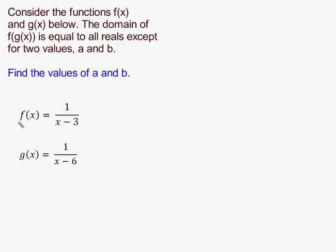In this problem we're given two functions, f and g, and we are to find the composite function f of g of x and find its domain. It turns out the domain of the composite function f of g of x will be all real numbers except for two values, so our job is to find those two values, call them a and b, that would not be in the domain of the composite function because for those x values the composite function would be undefined.